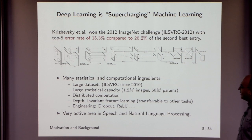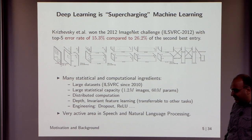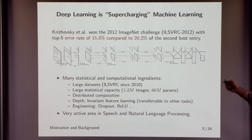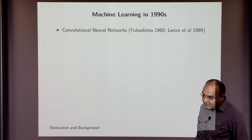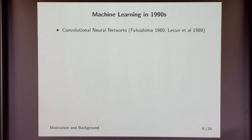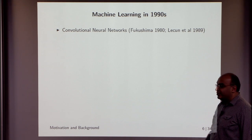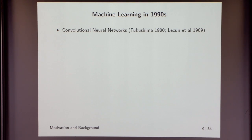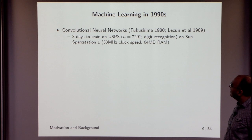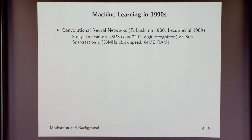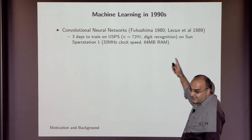Recently this has become a very active area with a lot of work in speech and natural language processing. You can trace these architectures back to convolutional neural nets first proposed in 1980 and made popular by the work of Yann LeCun towards the end of the 1980s and early 1990s. In the LeCun 1989 paper they took three days to train on USPS, which has about 7,000 images, on a Sun SPARCstation with a breathtaking 33 MHz clock speed and 64 MB RAM.